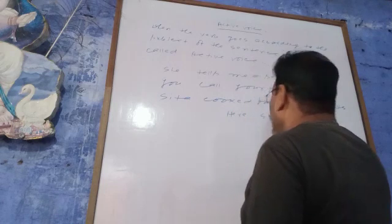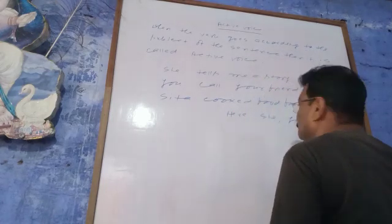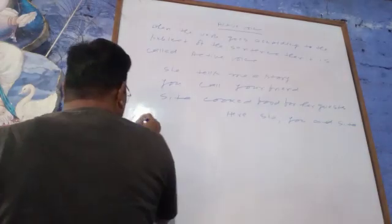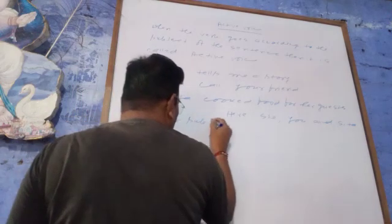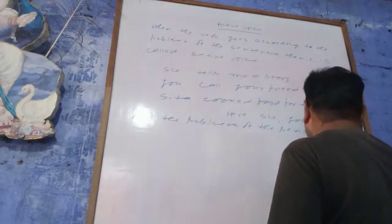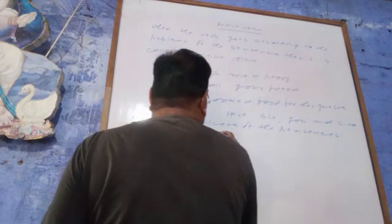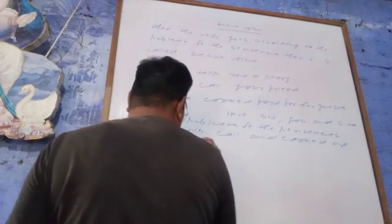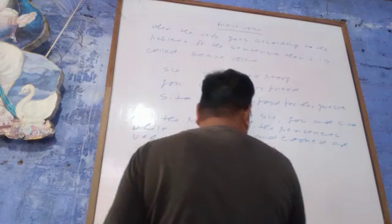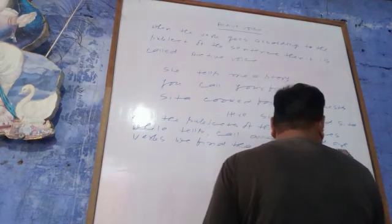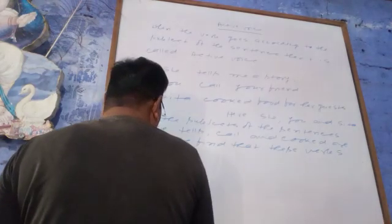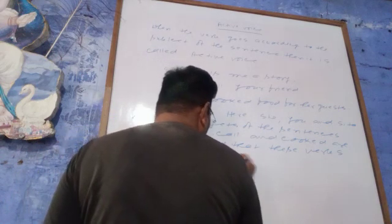Here, 'she,' 'you,' and 'Sita' are the subjects of the sentences, while 'tells,' 'calls,' and 'cooked' are the verbs. We find that these verbs go according to the subject.